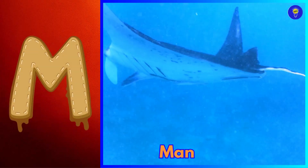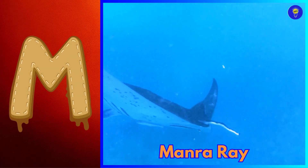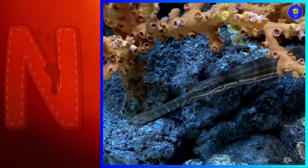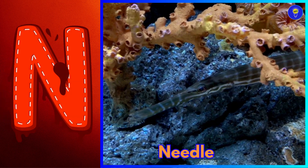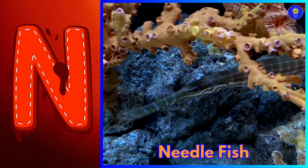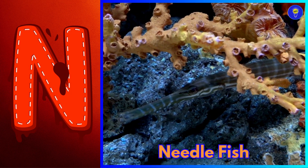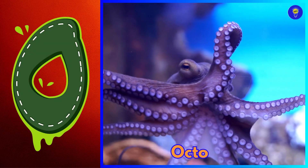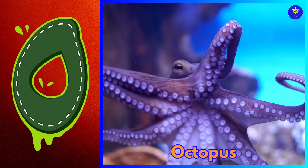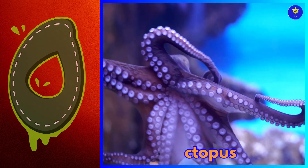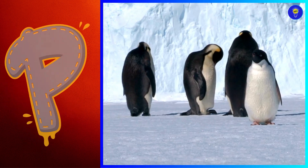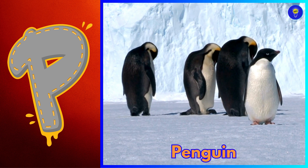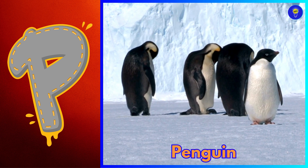M is for manta ray. Muh, manta ray. N is for needlefish. Nuh, needlefish. O is for octopus. O, octopus. P is for penguin. Puh, penguin.